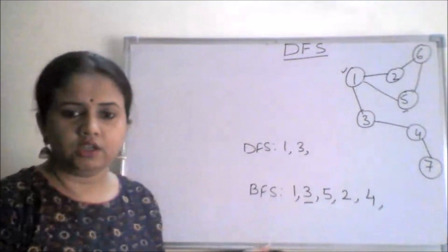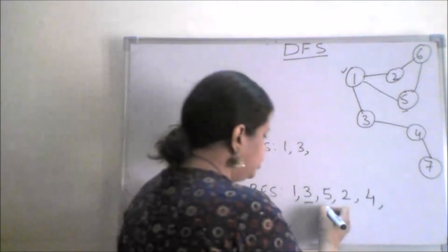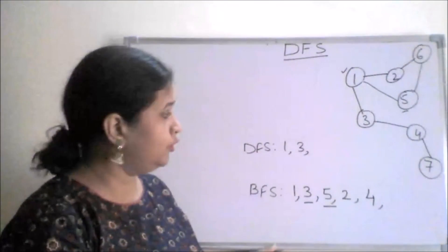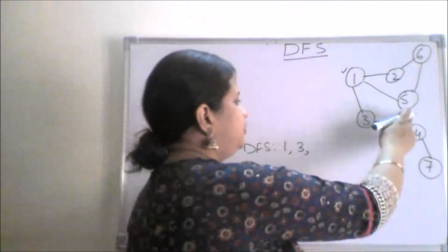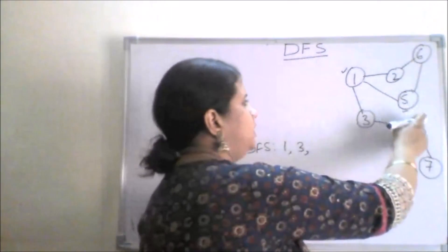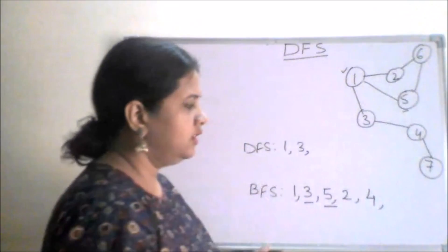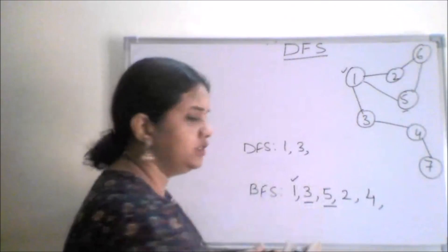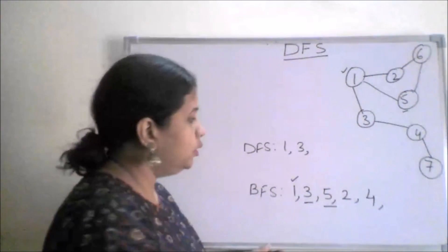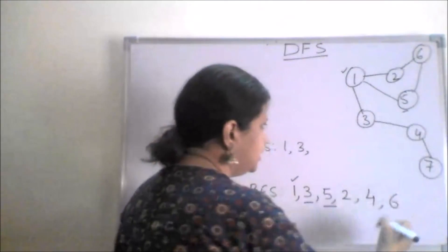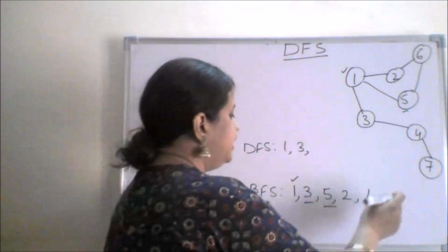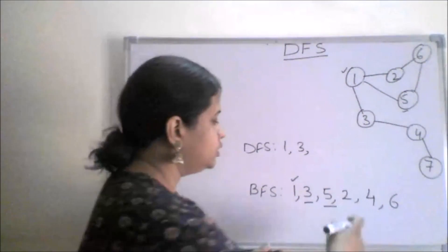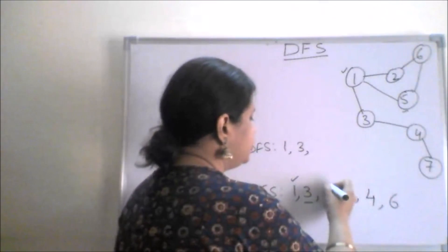Now we are supposed to explore node number five. I go to five and check whether there is any unvisited node. Five is connected with one as well as six, but one is already visited. The only node we should be concerned about is node number six. There is no other node attached with five to visit, so five is completely explored.